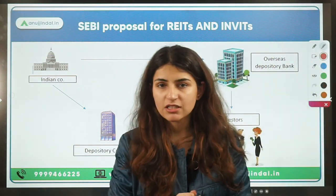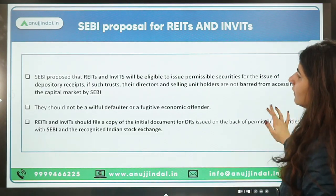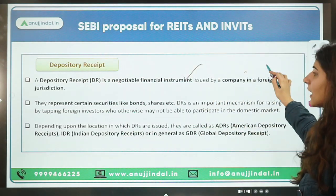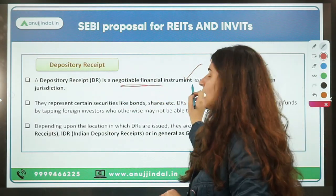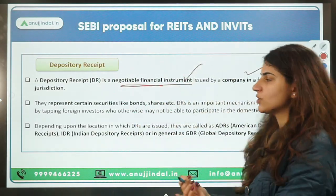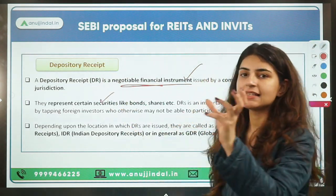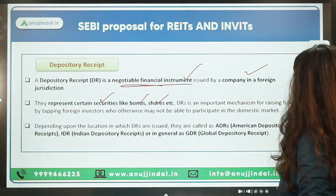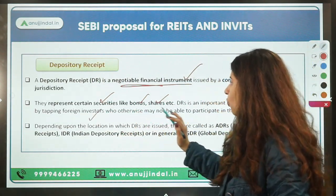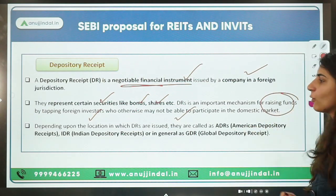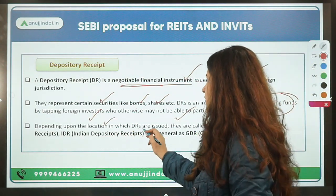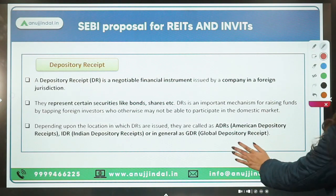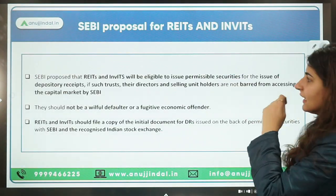A Depository Receipt is a negotiable financial instrument issued by a company in a foreign jurisdiction, representing underlying securities such as shares or bonds. It is an important mechanism for raising funds by tapping foreign investors who may not otherwise be able to invest in the domestic market. Depending on the location where DRs are issued, they are known as American Depository Receipt (ADR), Indian Depository Receipt (IDR), or Global Depository Receipt (GDR).